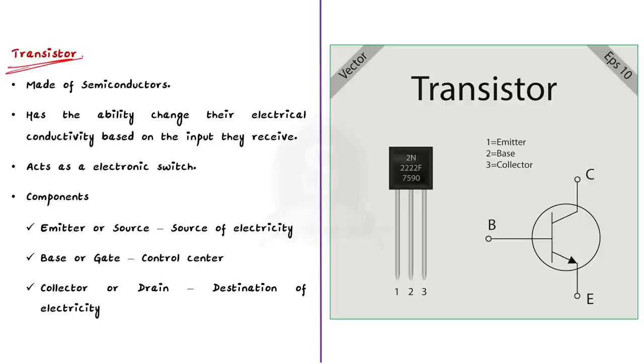Do you remember this image from our school books? Here we have a JFET transistor and a schematic diagram of a transistor. You might have noticed this component in various integrated circuits. These transistors are made from semiconductor materials, usually silicon. They have a special property. They can change their electrical conductivity based on the input they receive. This property of the transistor is used to make it act like a tiny electronic switch.